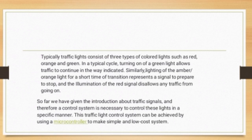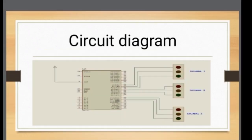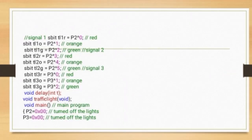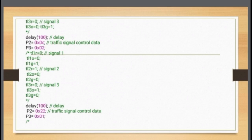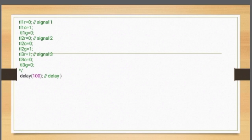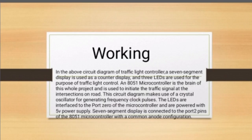A control system is necessary to control these lights in a specific manner. This traffic light control system can be achieved using a microcontroller to make a simple, low-cost system. The Keil software is used for coding. Steps: open Keil software, write the program by clicking on Project, click on New Project, write the program, click on Translate/Build, select Debug, then click Start/Stop Debug Session and run the program.